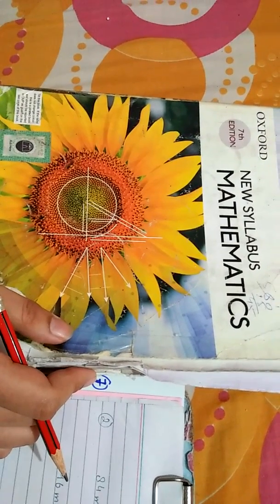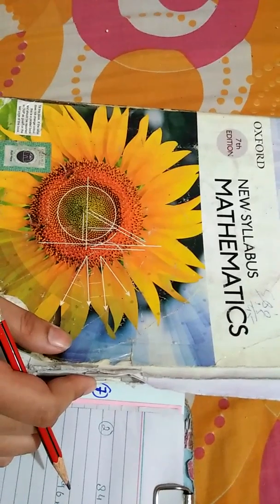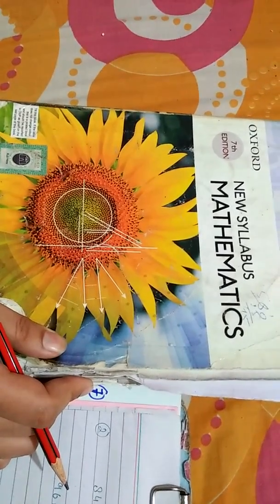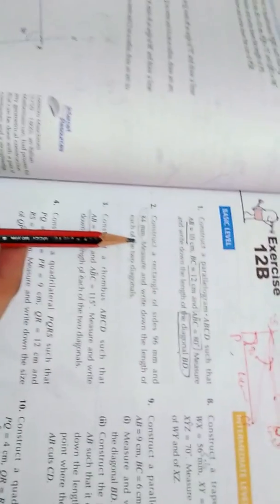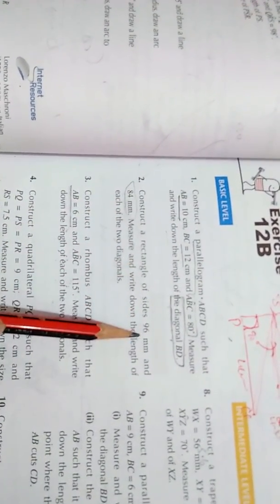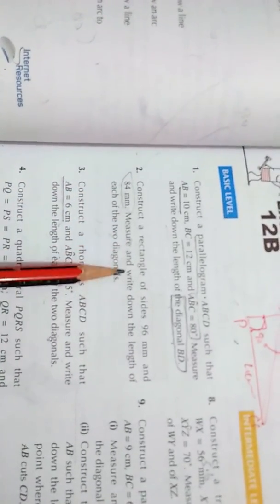So students, in the last lecture we have done Exercise 12B Question 3. Today we will do Exercise 12B Question 2 from the resource book New in Mathematics 7th Edition. In Question 2, construct a rectangle of size 96 millimeter and 84 millimeter. Measure and write down the length of each of the two diagonals.